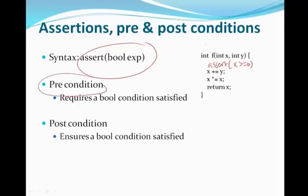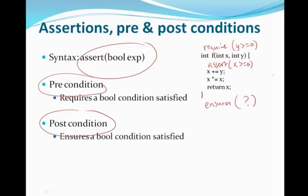A precondition for a function — for example, we may say that we require at this point that y is greater than or equal to 0. We make sure that the precondition is met so that the function will not have undesirable outcomes. A postcondition means that we ensure that some condition has come true at the end of the function. So there are three important things: assertions, preconditions, and postconditions.